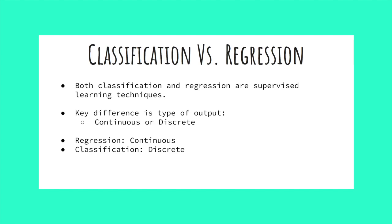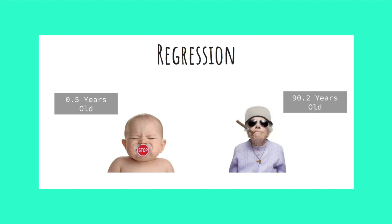With regression, we seek to predict a continuous value. This means it is numeric and could take on an infinite number of values. Consider predicting someone's age — there are an infinite number of values which could be guessed.